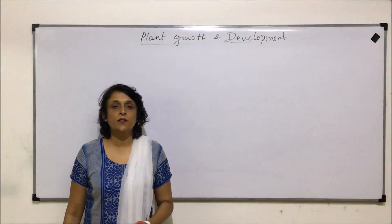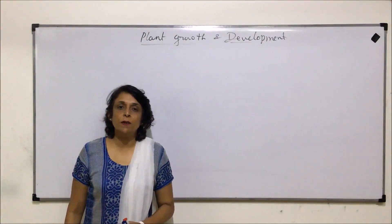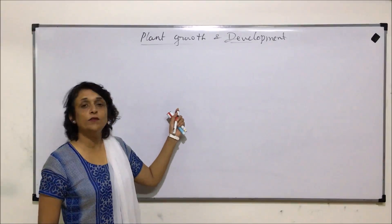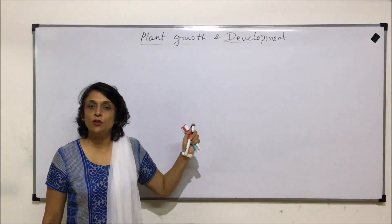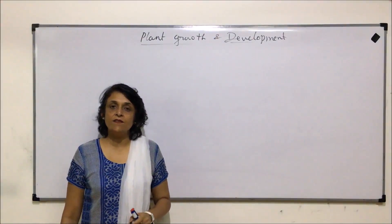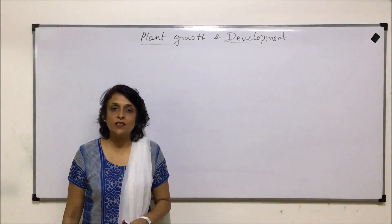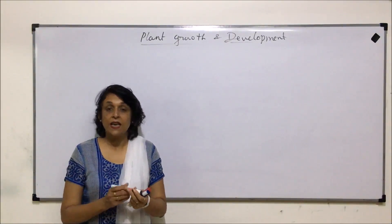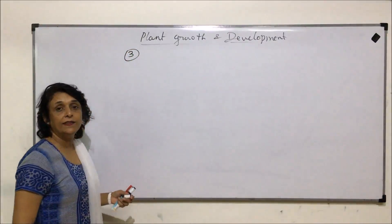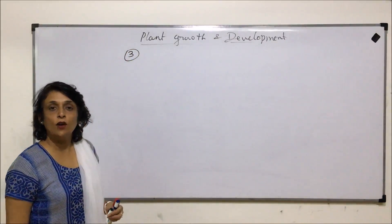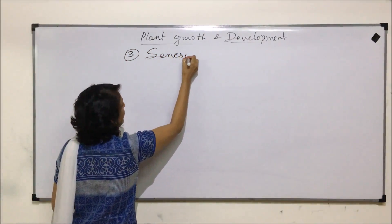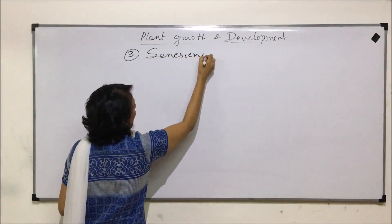In the previous videos we talked about the first two phases in the life of the plant: growth and development. The first one was germination, and the second phase was the reproductive phase when flowering takes place. Now we are talking about the third phase in the life cycle of the plant, and that is senescence and death.